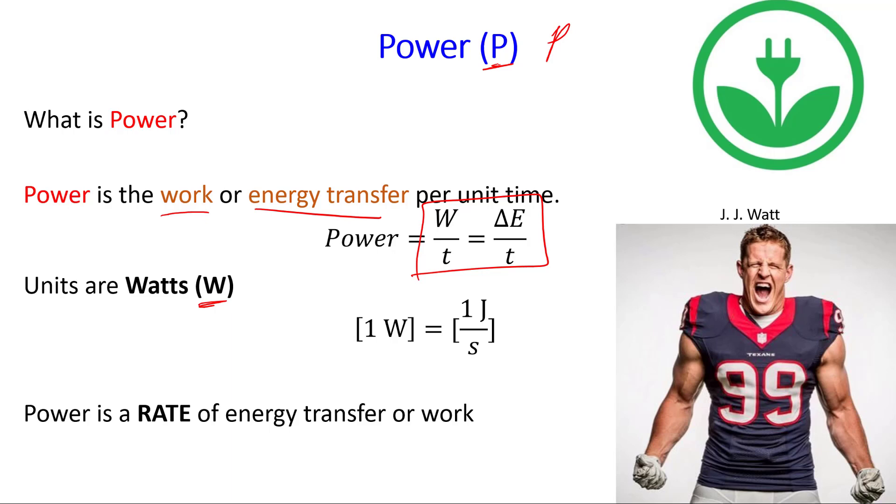And just to reiterate, power is not something that objects have. Energy is something that objects have and transfer around. Energy is conserved. But power is a rate. Power is how quickly energy is transferred or how quickly work is done.